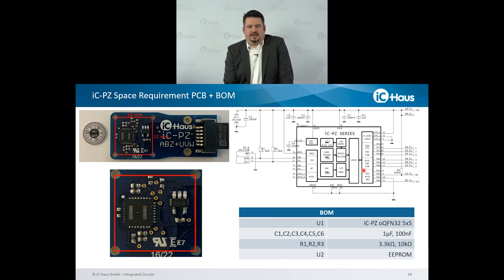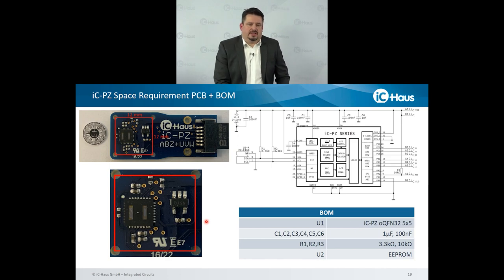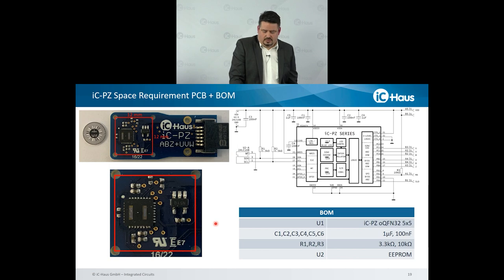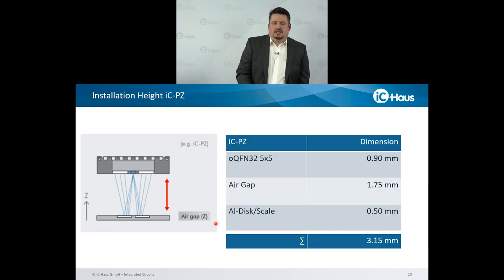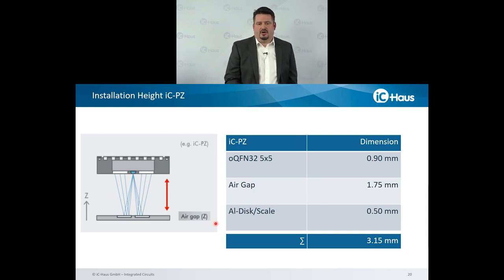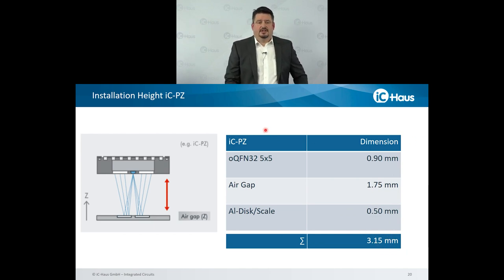As you can see in the schematic here on the right side, ICP-Z of course needs a certain amount of components, but still just a few. We have some standard capacitors, there are some resistors. The only additional thing needed is an EEPROM — an external EEPROM — which you can see on the left side. This is just a two-layer design by 12 by 12 millimeters combined with the 9 millimeter code disk. That's all the ICP-Z needs to have the full functionality as specified. The installation height is 0.9. The air gap is nominal 1.75. This also leads to just a slight over 3 millimeter total height.